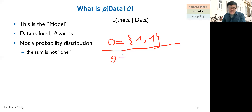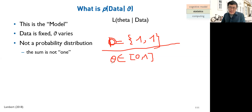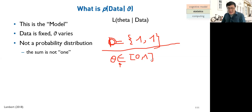We need a distributional form to calculate likelihood. For binary outcomes (head/tail, yes/no, correct/incorrect), the appropriate distribution is the Bernoulli distribution. We plug in each theta value and calculate the likelihood using the Bernoulli function. When data is [1, 1], the curve is zero at theta = 0 and theta = 1, and peaks somewhere in between, because you could never observe two heads with a coin that always gives tails.